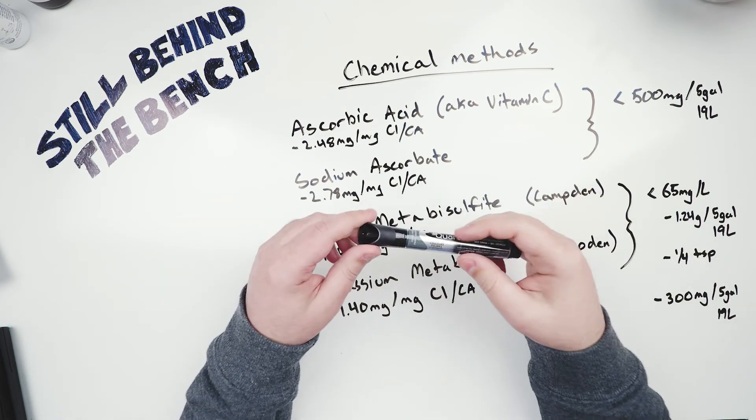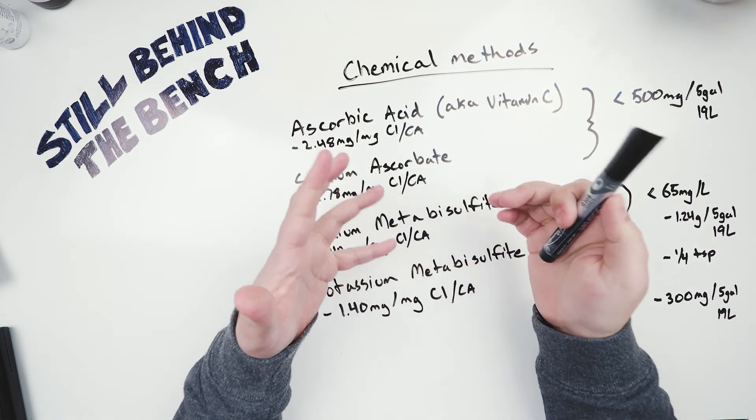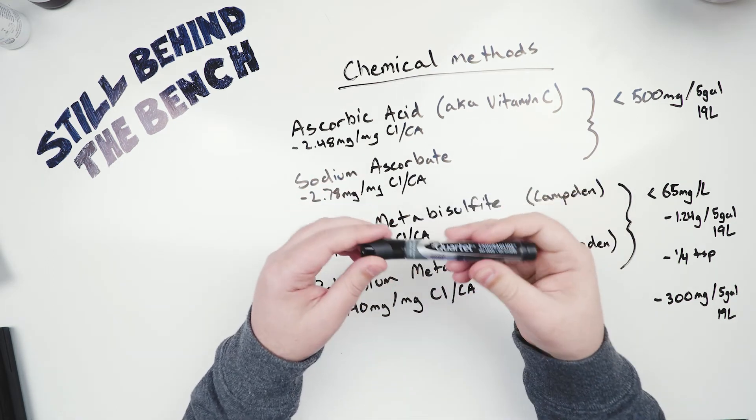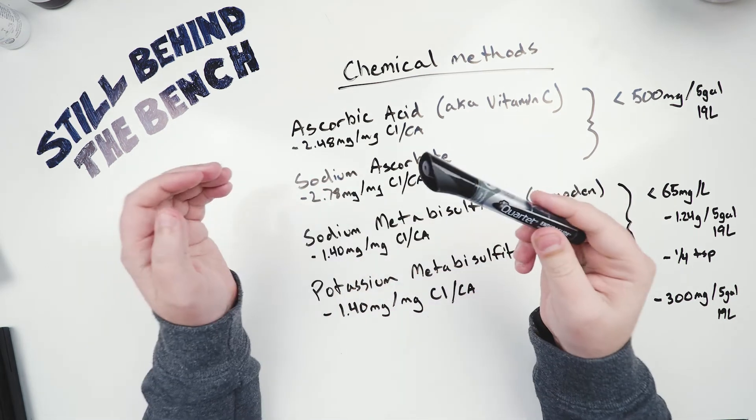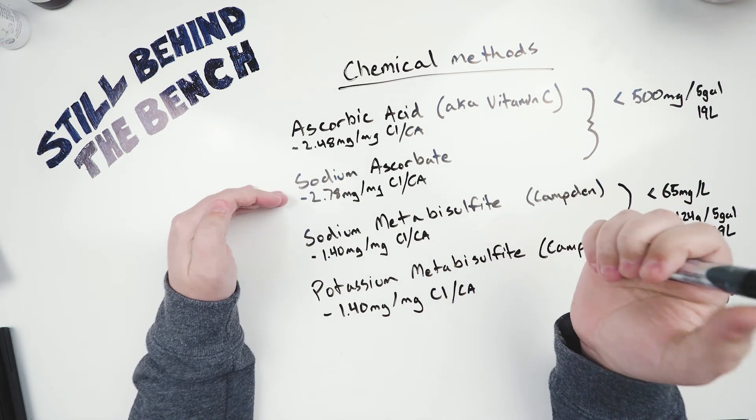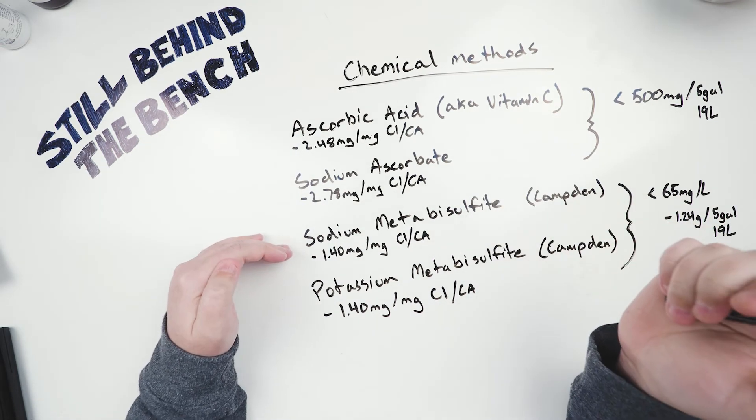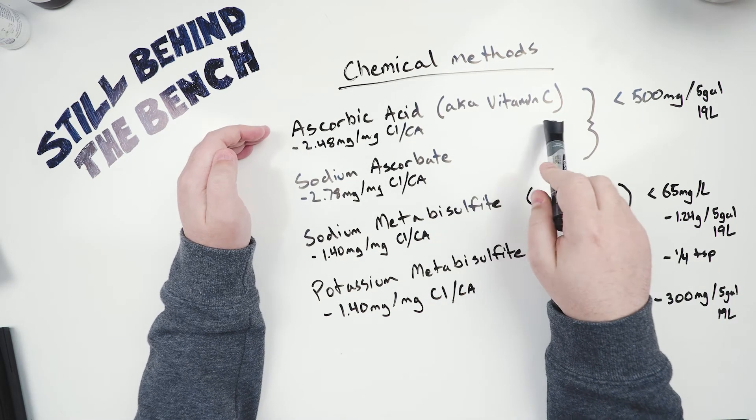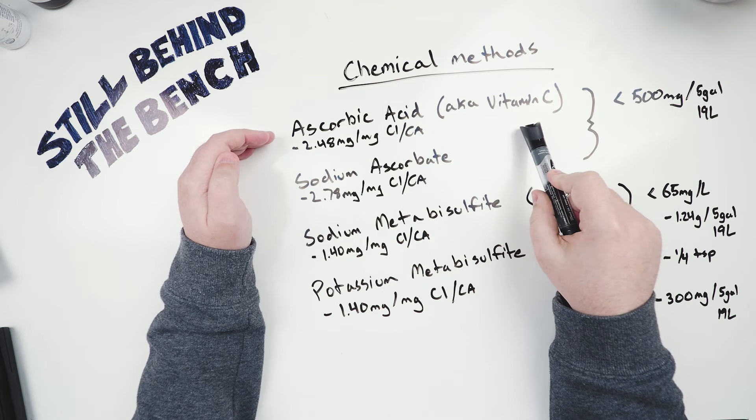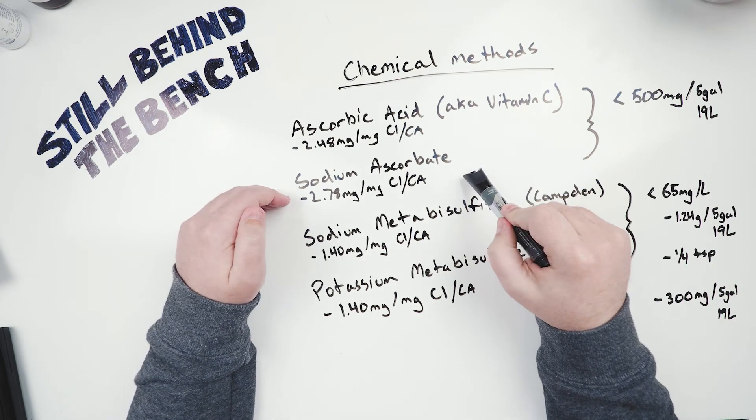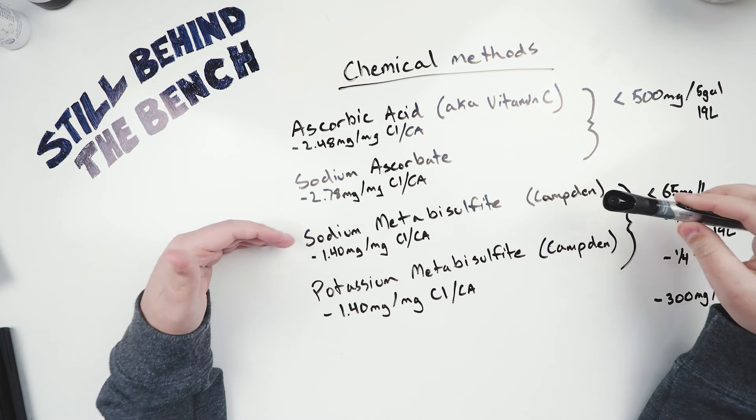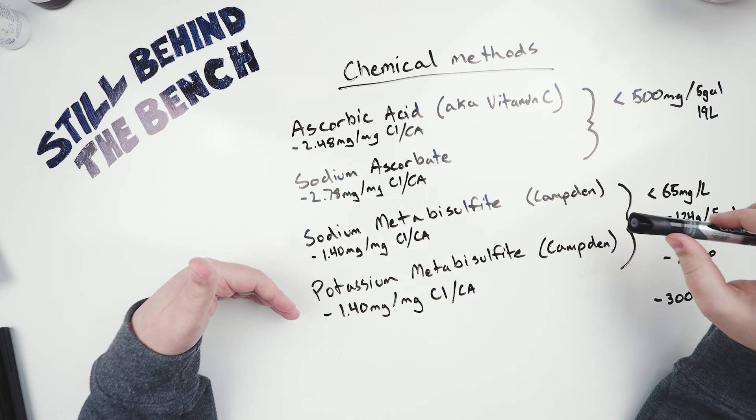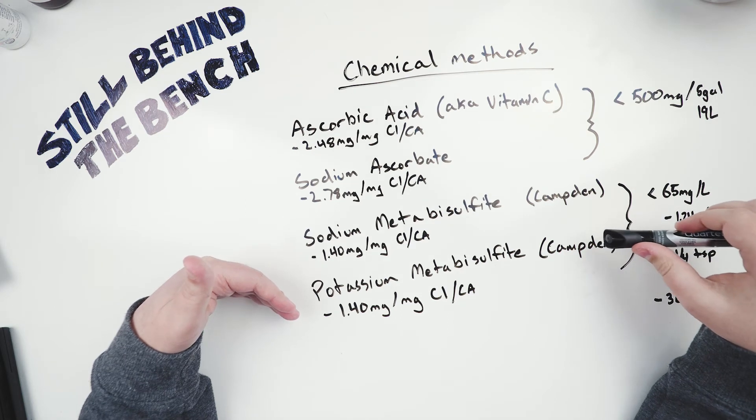Okay so finally we get to the chemical methods. There are numerous chemicals that you can use technically but I can really only recommend four of the chemicals that I know that can do the job. They are ascorbic acid, sodium ascorbate, sodium metabisulfite, and potassium metabisulfite. So ascorbic acid is also known as vitamin C. A lot of people probably take it every day. Sodium ascorbate is just the sodium salt of ascorbic acid. Then sodium and potassium metabisulfite are also known as Camden powder or Camden tablets. It's often used to sterilize water from microorganisms.